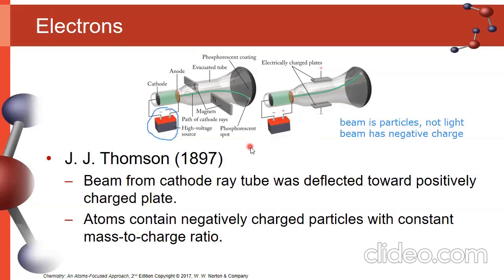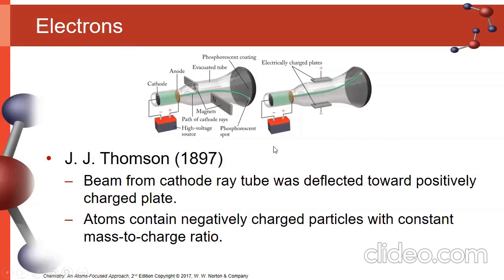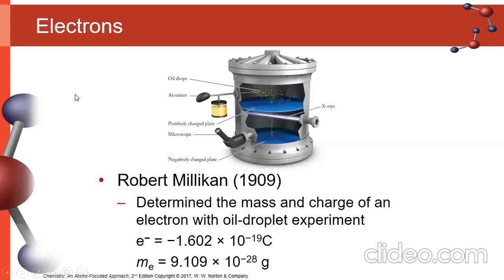Based on this information, Thomson was able to determine the ratio between the charge and the mass, but he didn't know what the individual charge or mass was. He knew something was there with a negative charge, but didn't know how to use it further. So about 10 years later, Robert Millikan devised a really elegant experiment to determine what the charge is. If we can determine the charge and use the charge-to-mass ratio, we can also determine the mass. This is called the oil drop experiment.